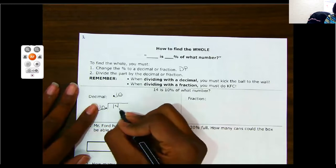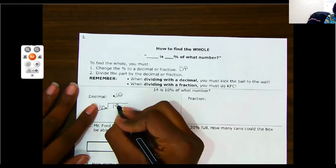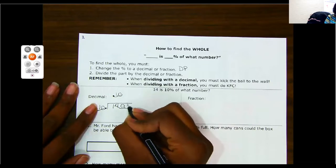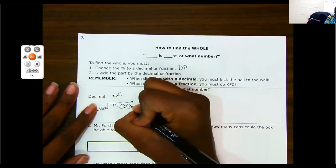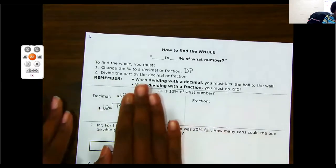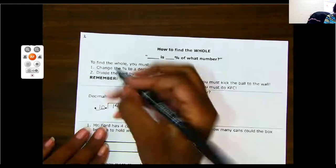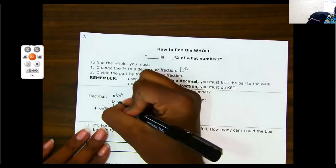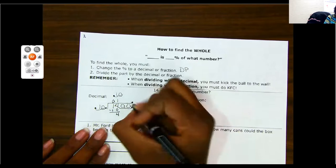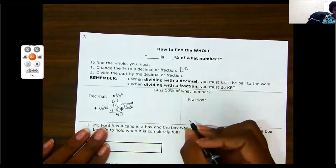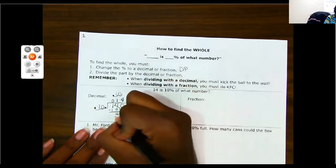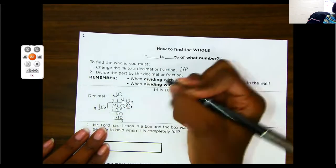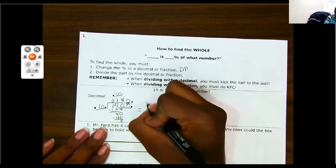Remember your total always goes underneath the house. Your part is on the outside. I cannot have a decimal in my divisor. So I'm going to kick the ball to the wall. One, two. Now it's a 10. Because I kicked it on the outside, I must also kick it on the inside. This is a whole number. So my invisible decimal is at the back. One, two. Fill in my zeros. Make sure I bring my decimal up. Now I can divide. 10 will not go into one. It will go into 14 one time with four left over. Bring down my zero. 10 will go into 40 four times. Nothing left over. I still have a zero. I need to bring that up. So my answer here is 140.